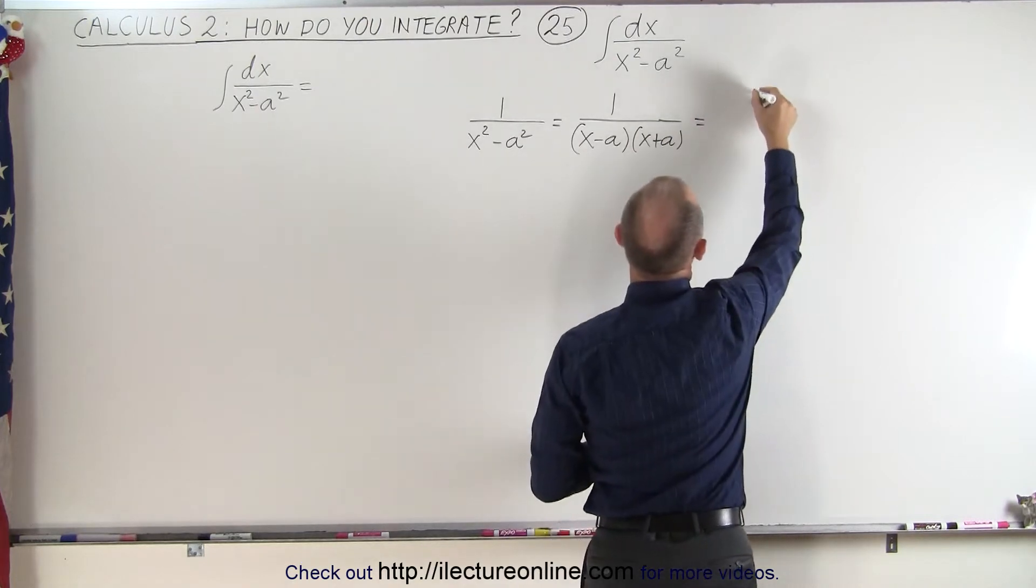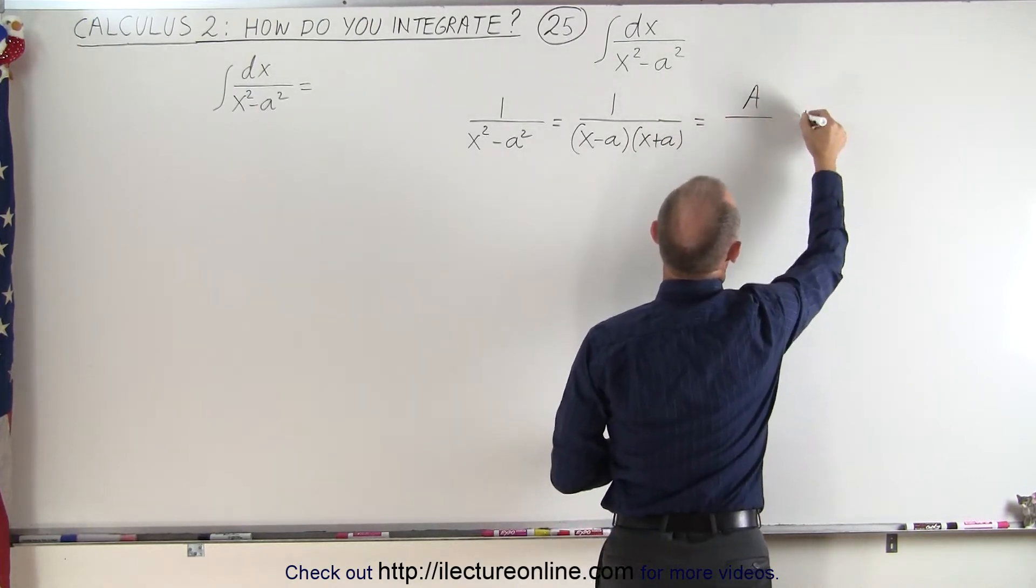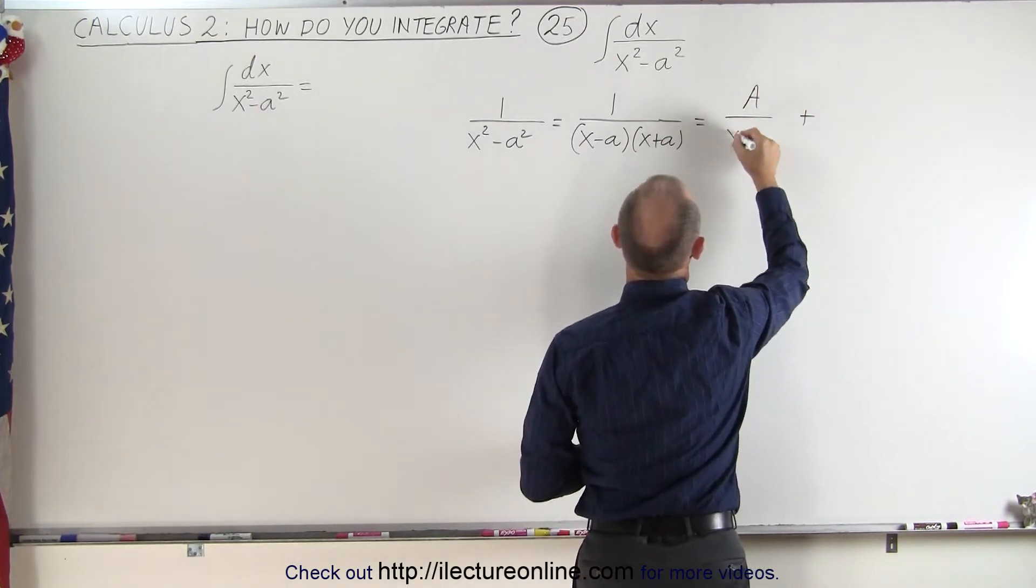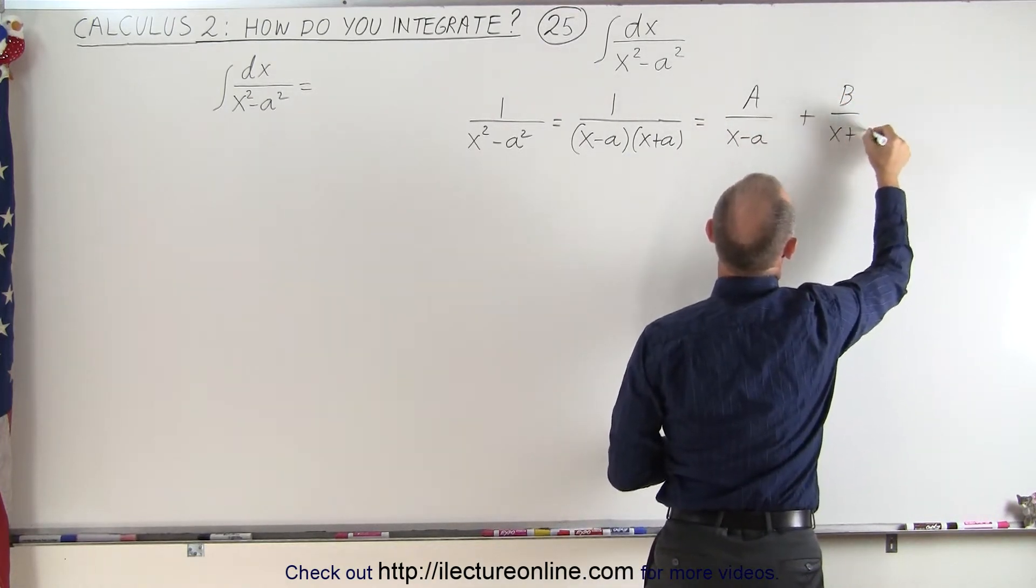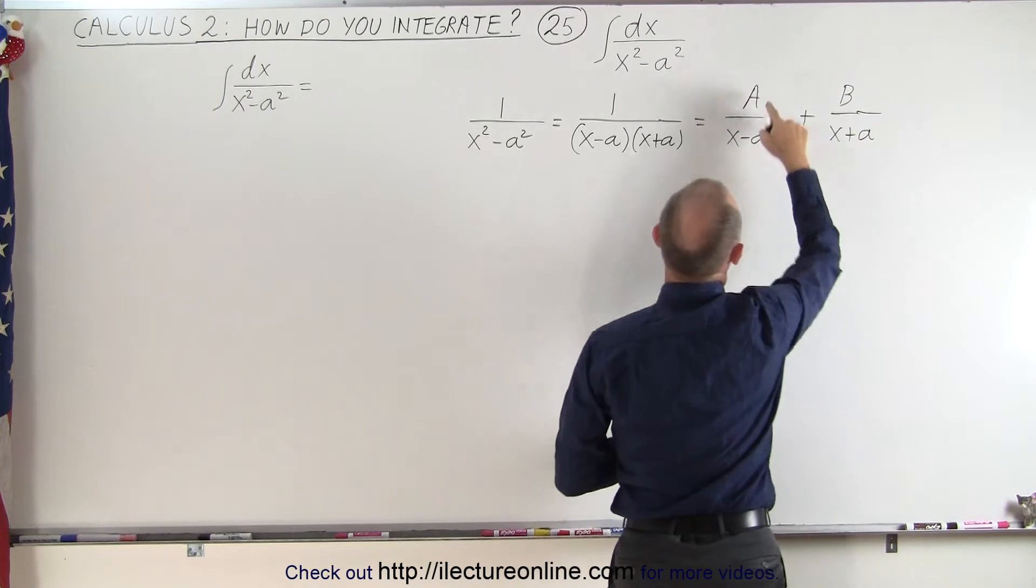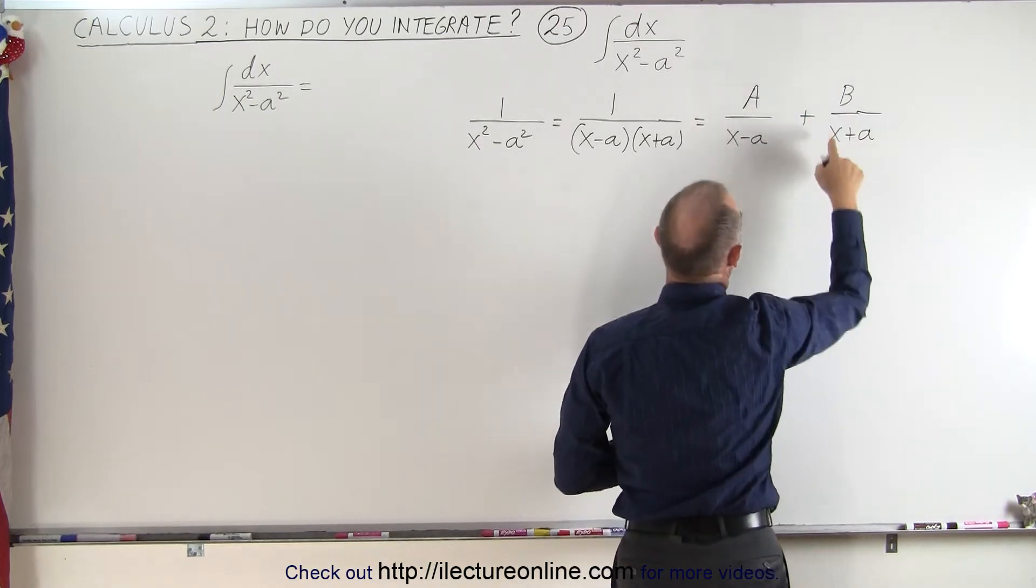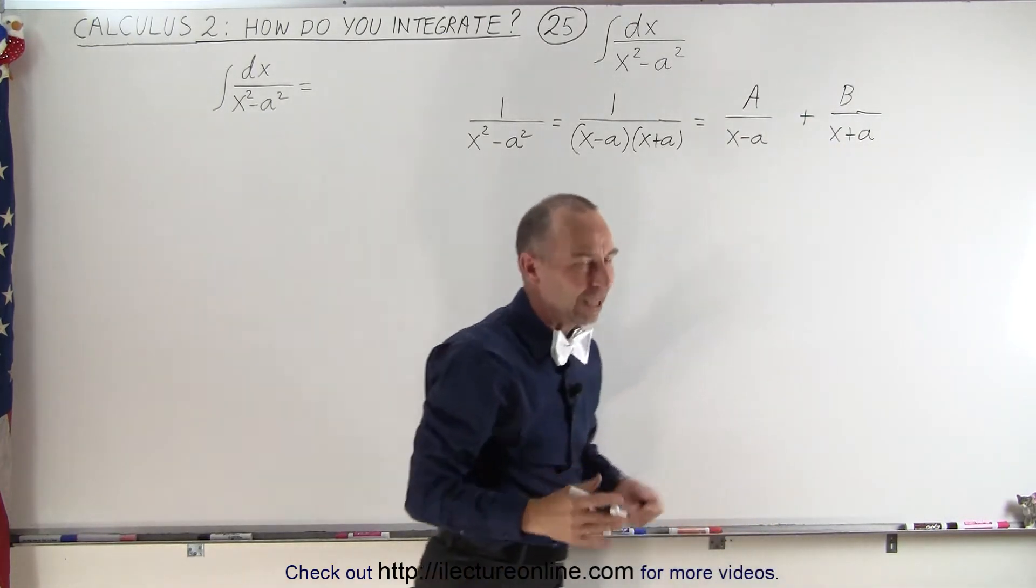Which is equal to the sum of the two fractions: A divided by x minus a plus B divided by x plus a. And again, this can be A over x plus a and B over x minus a. It doesn't matter. You'll get the same result.